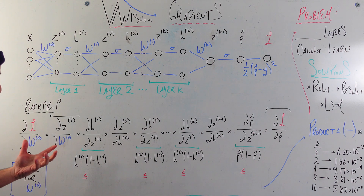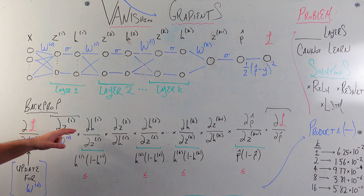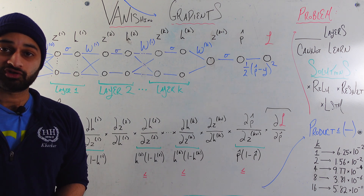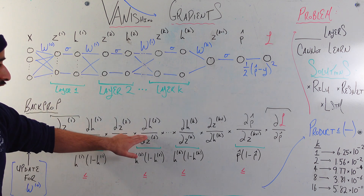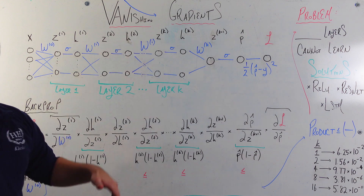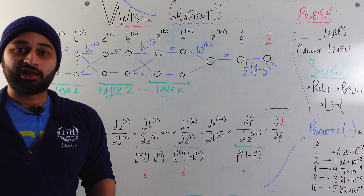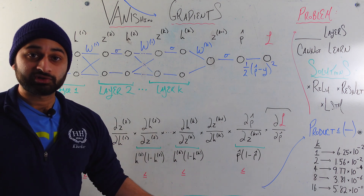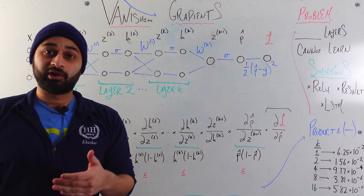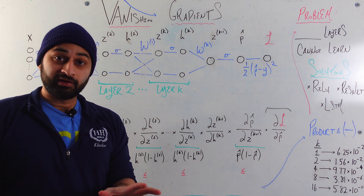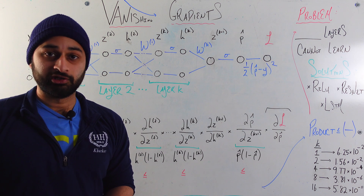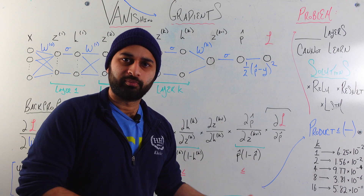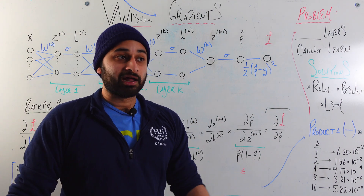Let's dive deeper into the green-bracketed terms. What are they and where are they in the network? For example, dh1/dz1 is right here — where we go from a z vector and apply element-wise activation functions to get to the first hidden vector. Another instance is dh2/dz2, which is the exact same thing happening in the second hidden layer: going from some z vector, applying element-wise activation function sigma, to get to the second hidden vector. So each of these green-bracketed terms involves going from a z vector to a hidden vector by applying an element-wise activation function. We've been assuming this activation function is a sigmoid, so let's continue with that.